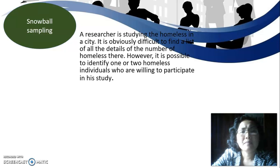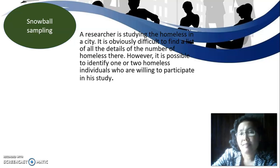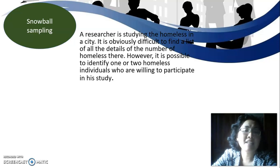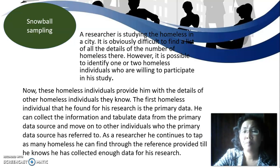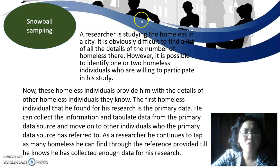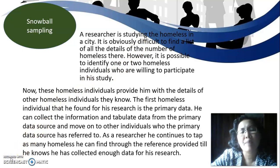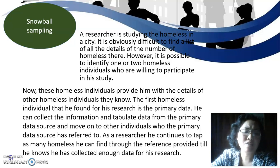An example of snowball sampling: a researcher studying the homeless in a city finds it difficult to obtain a list of all homeless individuals. However, he identifies one or two homeless individuals willing to participate. These individuals then provide details of other homeless people they know. The first individual found is the primary data source. The researcher collects information from that source, then moves on to others referred by the primary source, continuing to find as many participants as possible through referrals until enough data is collected.